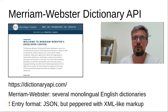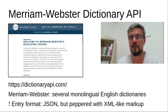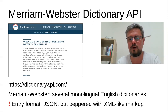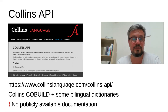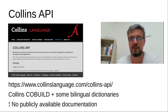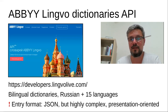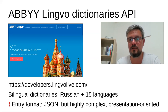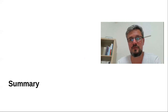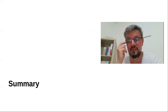Merriam-Webster, the American dictionary publisher, has an API for their monolingual English dictionaries. Interestingly, the URL they've registered is dictionaryapi.com, as if they were the only dictionary API in the world. They serve entries in JSON, but it's a somewhat unusual JSON interspersed with some kind of home-baked XML-like markup that's difficult to decipher. Collins, publisher of the legendary Collins COBUILD dictionary, has an API providing access to COBUILD and a couple of other dictionaries, but again there's no publicly available documentation — you need to sign up first. Finally, ABBYY, the Russian dictionary publisher, has an API for their bilingual dictionaries with Russian; they serve entries in JSON, but the JSON is hugely complex.